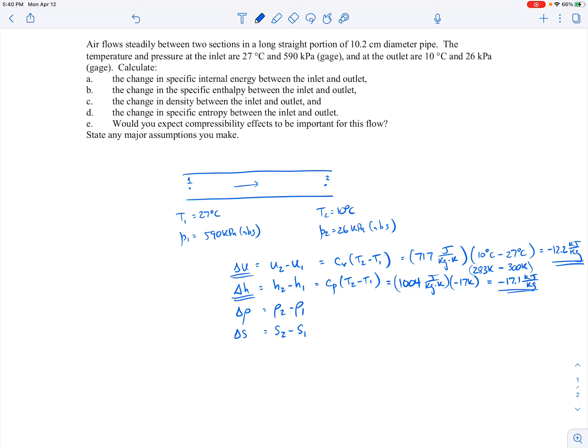The change in the density we can find using the ideal gas law. So to find the density at section 2, I'm going to use the ideal gas law. Rho 2 would just be P2 over RT2, and then the same at section 1. And when I'm using the ideal gas law, I just need to make sure I'm using absolute temperatures and pressures. So here the absolute pressures are given, 590 kilopascals at section 1, 26 kilopascals at section 2.